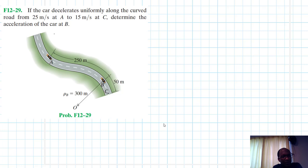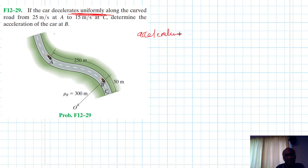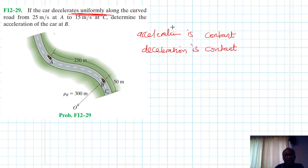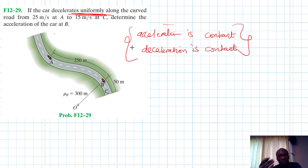We have a car decelerating from A to C, and the deceleration is uniform. Uniform deceleration means acceleration is constant. Every time you see the word 'uniformly,' that signals some constant value, so here we can apply the equations of motion when acceleration is constant.